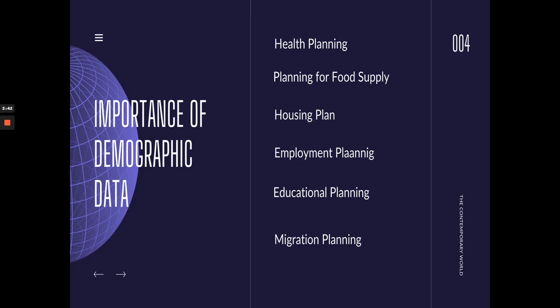We also need to know the number of people in order to determine how many doctors, nurses, and personnel to hire to man the hospitals. That's health planning — including how many family planning kits to distribute to the community, how many vitamins and vaccines are needed. If you don't know the population number, you will not be able to have a concrete plan. The same applies to planning for food supply, so that you know what to prioritize.